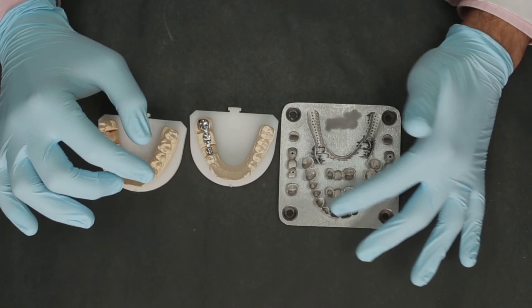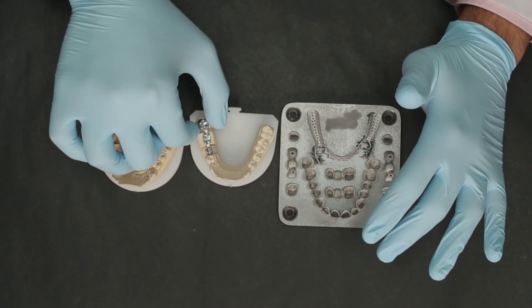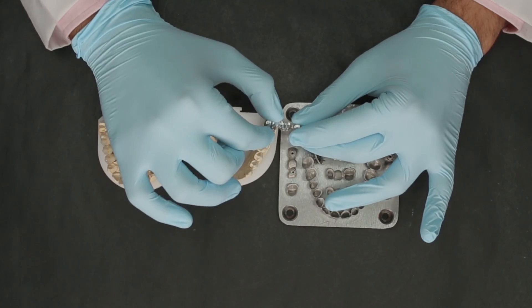It looks absolutely beautiful. This is how the chrome cobalt frameworks are then retrieved from the DMLS unit. The chrome cobalt framework is then finished and polished, and this is what you get.